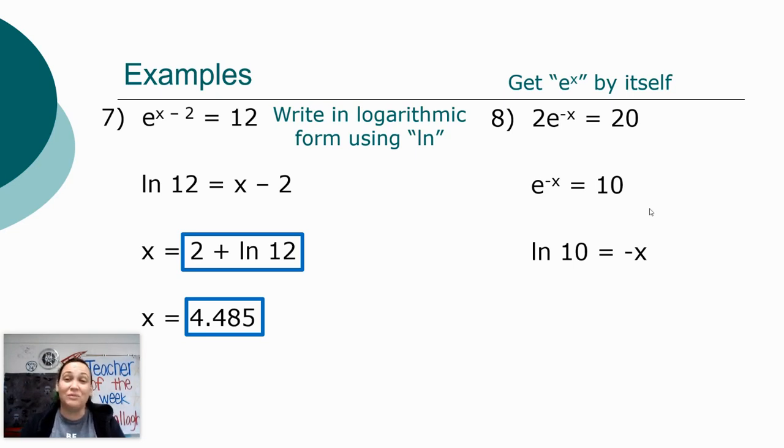I do need the x to be all by itself so I can be done with this problem. So I'm going to divide by negative 1, and that negative sign just goes in front of the natural log of 10. Again, that negative does not go on the 10. The natural log of 10 is one whole unit, so the negative has to stay outside of that unit.